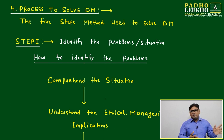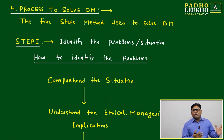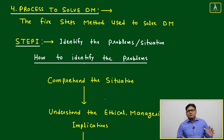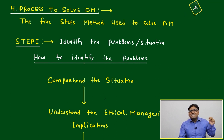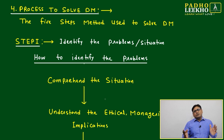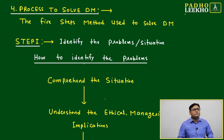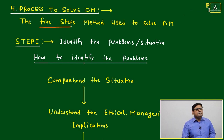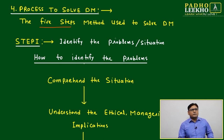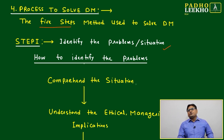We understood the frame of reference, identifying options, and taking everything into account. But in a practical way, what are the steps we follow to solve decision making? Please give a little more concentration for the next 10 minutes — it will give a very solid understanding. We are following a five-step method. Step one: identify the problem or situation.